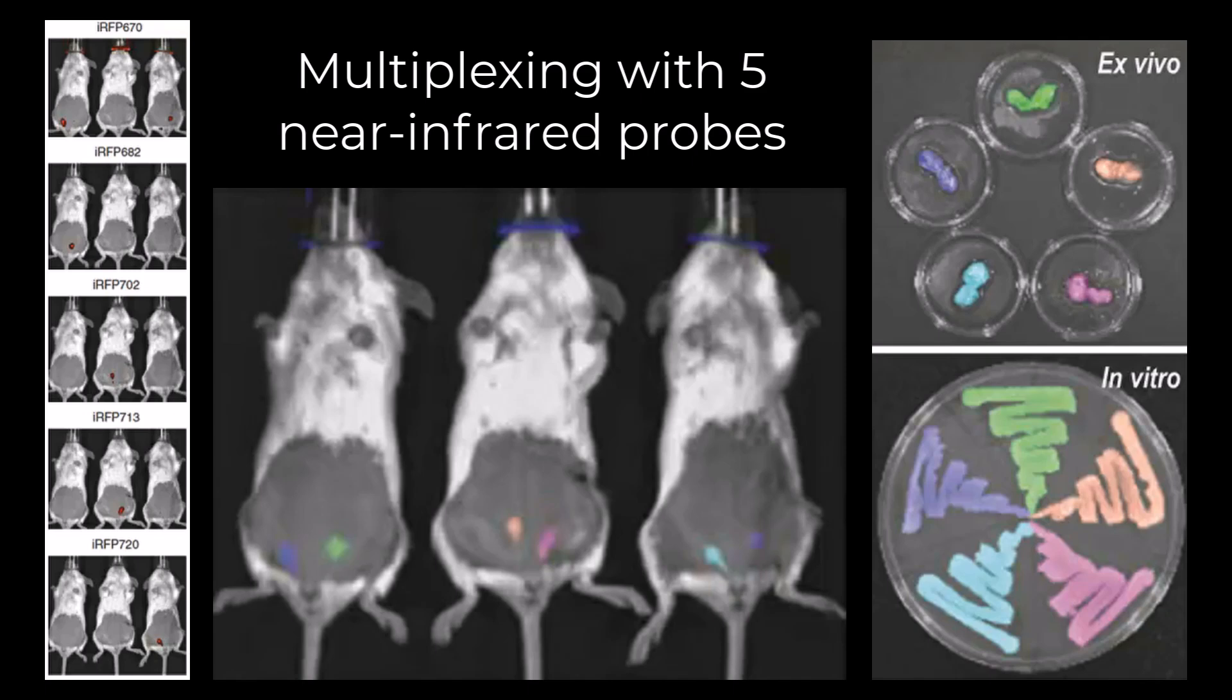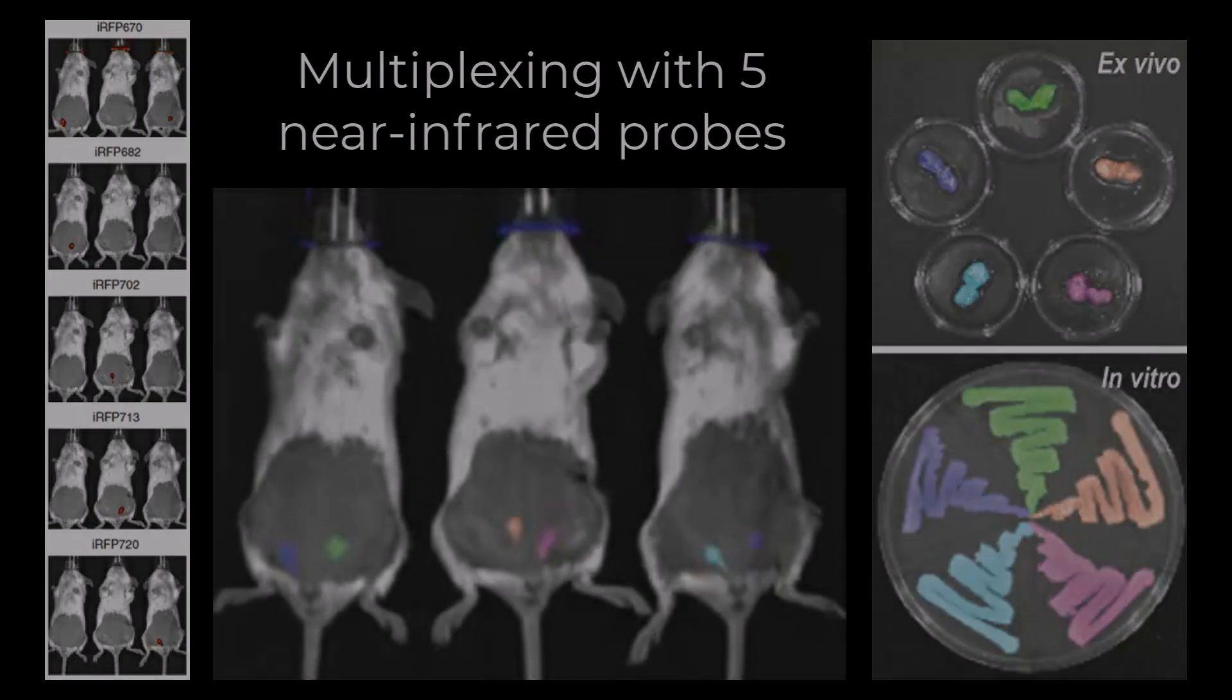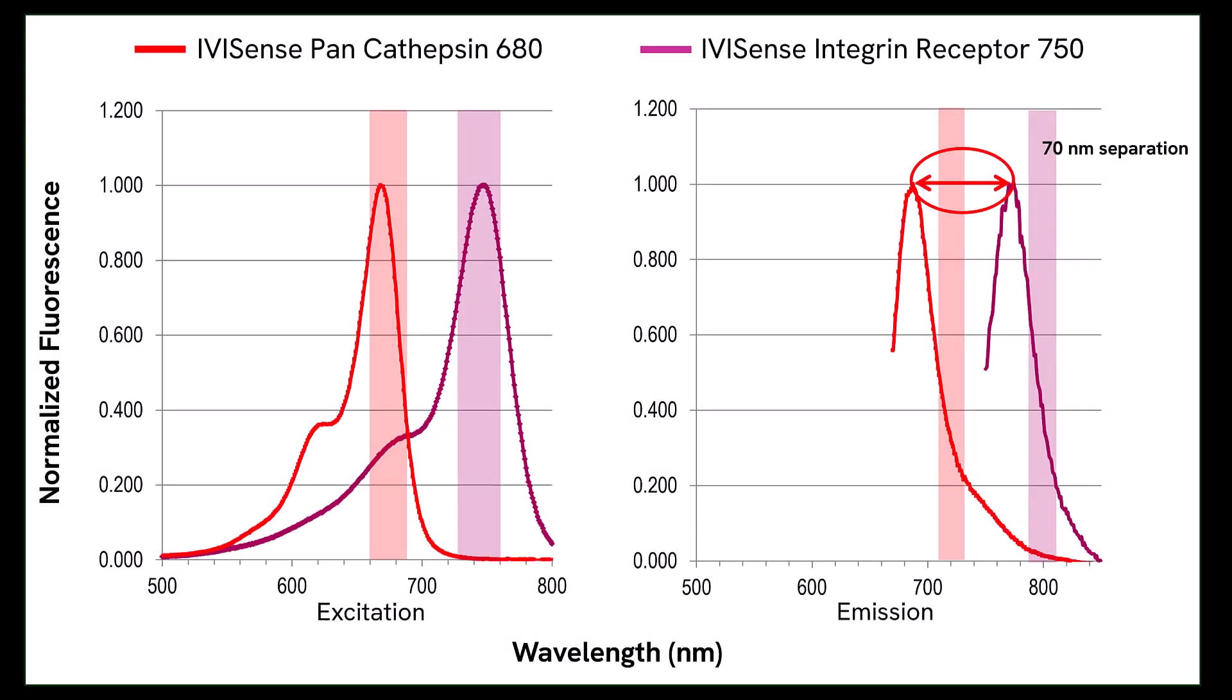Lastly, spectral unmixing can help resolve signal from probes with overlapping excitation and emission curves. Spectral unmixing can accurately determine and separate the percentage of a pixel's intensity into spectral components, allowing for accurate quantitation and multiplexing even into the near-infrared. Even small shifts can be detected, as shown here where five near-infrared probes were separated and independently displayed.